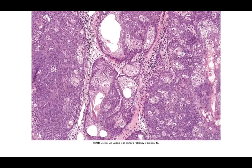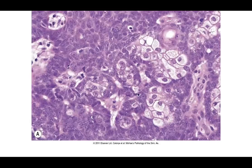Here's an example of relatively bland basaloid cells with scattered well-differentiated sebocytes — this is a sebacioma. On higher power, you can see the bubbly nature of the cytoplasm within the well-differentiated sebocytes, and most of the basaloid cells have very similar nuclear size with no significant mitotic activity.